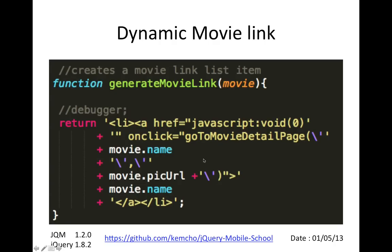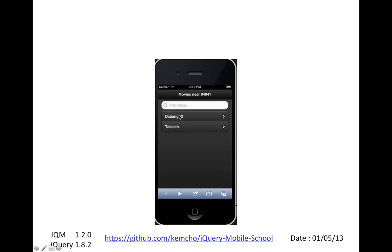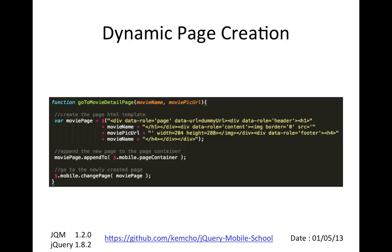Now we want to define the goToMovieDetailPage method. Every time a user clicks on a link, they need to go to a page — that page was previously hand-coded as static HTML, but it no longer exists. So we create a JavaScript function that knows how to create that page dynamically. It takes all the dynamic information as parameters and generates HTML using JavaScript — the same HTML as in tutorial three, except the movie name and picture URL are abstracted out. We create a movie page object with the dynamic information, append it to the jQuery Mobile page container, and call $.mobile.changePage to navigate to that new page.